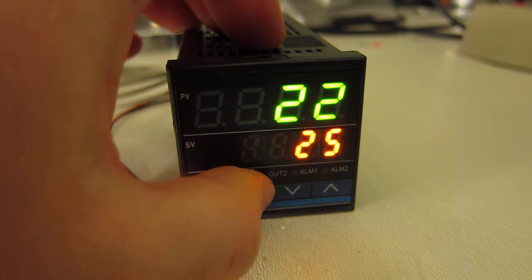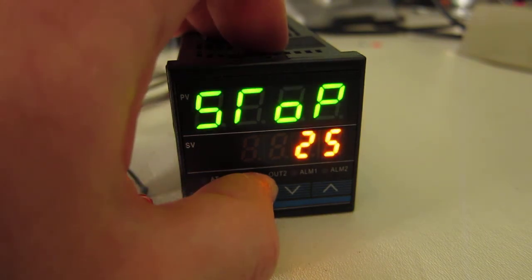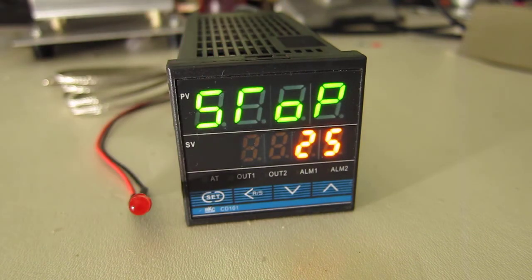I'll go ahead and hold down the run stop button for a couple seconds and you can see that now the display is indicating stop so the PID controller should be in stop mode.